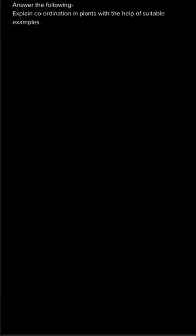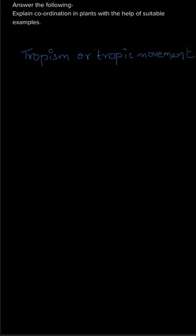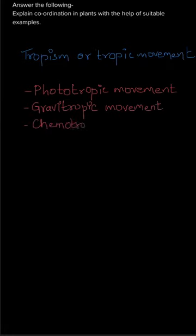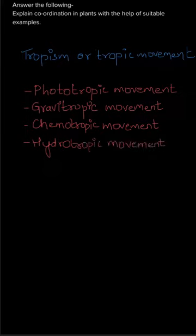In this question, let us learn about coordination in plants with a few examples. Plants don't consist of any organ system like humans do, such as the respiratory system, circulatory system, or excretory system. Instead, they show certain responses to external stimuli. The movement or growth of plant parts in response to external stimuli is called tropism or tropic movement. These are of four types: phototropic movement, gravitropic movement, chemotropic movement, and hydrotroptic movement.